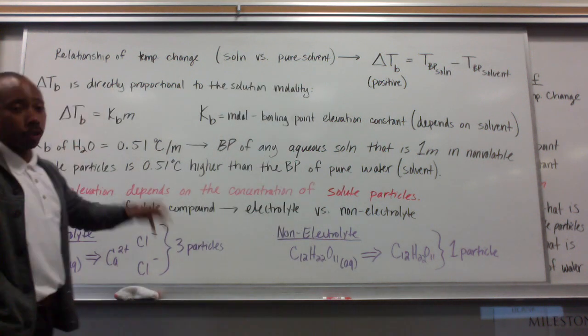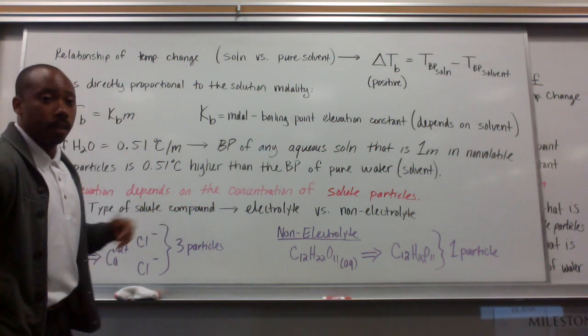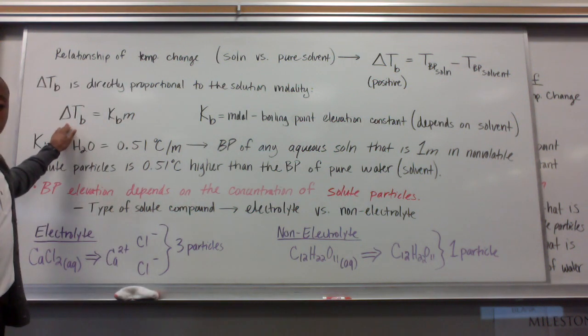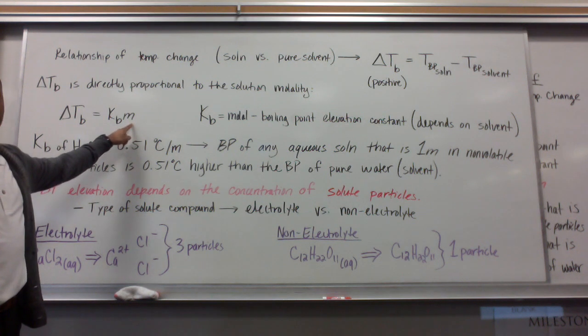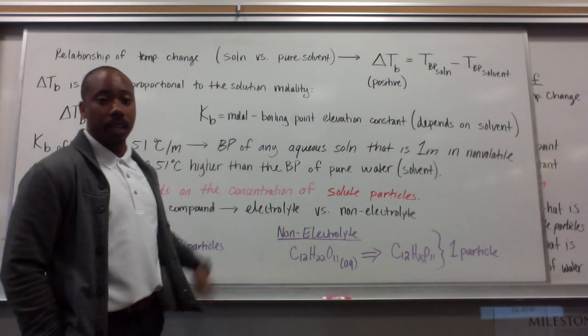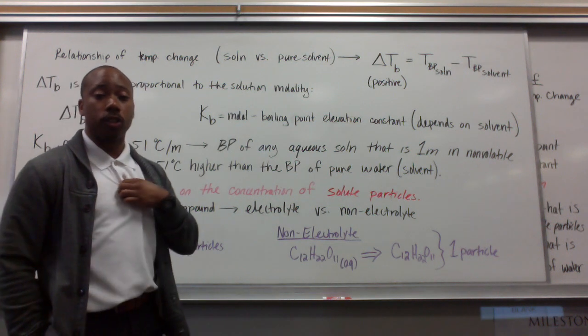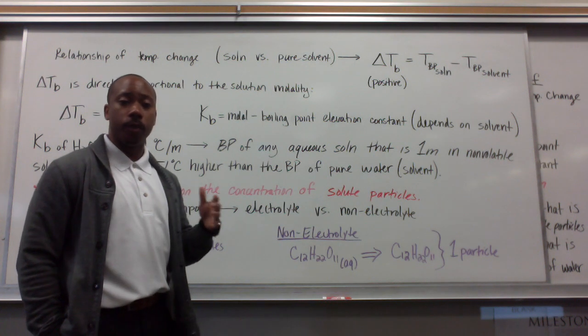Now delta T sub B is directly proportional to the solution molality, so it depends on molality. The equation that governs that relationship is delta T sub B equals K sub B times molality. Now K sub B is the molal boiling point elevation constant. This depends on the solvent, so it's going to depend on water, since water is primarily going to be the solvent we're dealing with, but not in all cases.